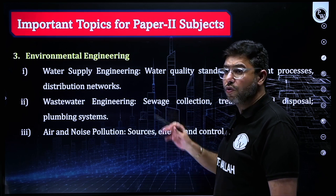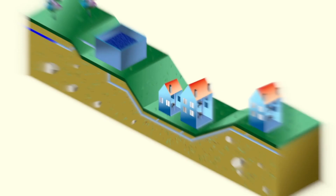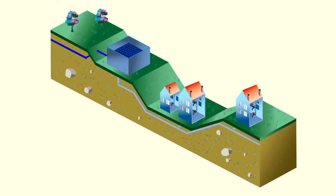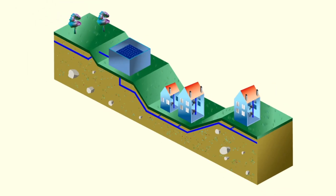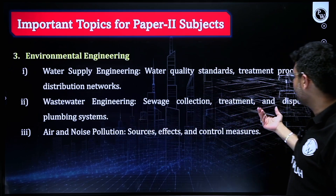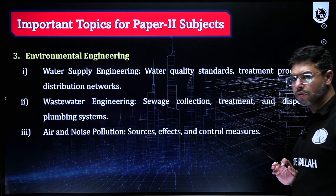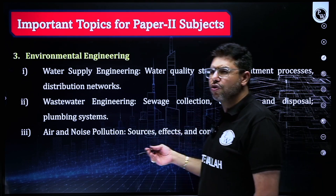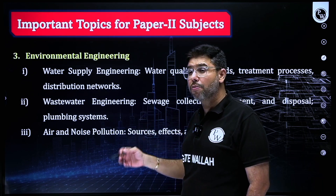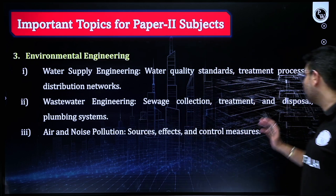Environmental engineering is overall very important. Focus on water supply engineering — water quality standards, treatment processes, and distribution networks. Then wastewater engineering — sewage collection, treatment, disposal, and plumbing systems. Air and noise pollution is not as important but questions are asked — know sources, effects, and control measures.